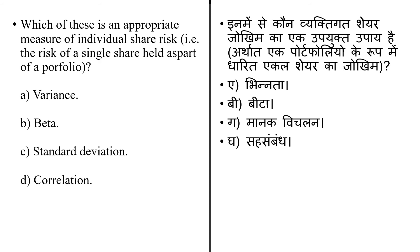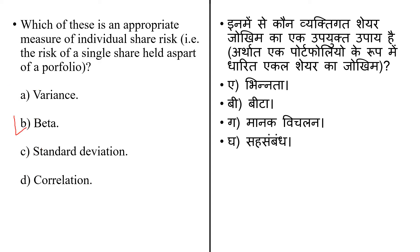Which of the following is an appropriate measure of a diversified share's risk? The options are variance, standard deviation, correlation, and beta. Beta in finance is a measure of how an individual asset moves when the overall stock market increases or decreases. Beta is a useful measure of the contribution of an individual asset to the risk of a market portfolio when added in small quantities. The answer is option B — beta.